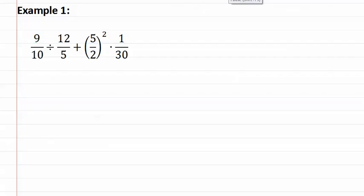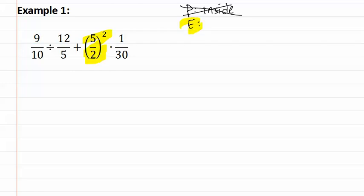Let's look at example one. Let's start with P for parentheses. There are parentheses, but remember it's only for what is inside of the parentheses — there's nothing to do, so this step is skipped. We move on to exponents. There is an exponent, so we will start there. Five-halves squared means you square each of the numbers, giving you 25 fourths. We will place this into the problem and carry everything else straight down.